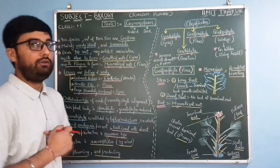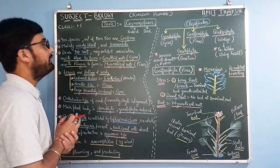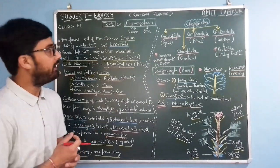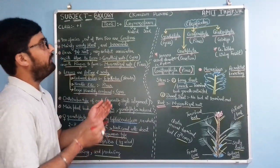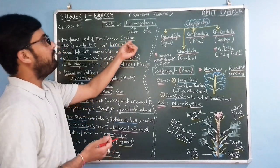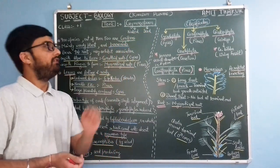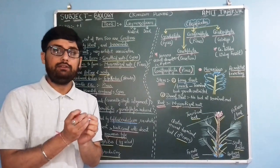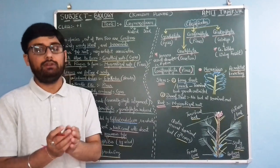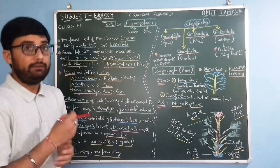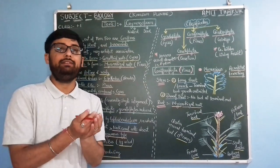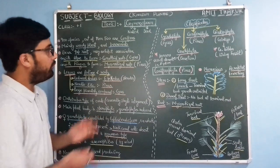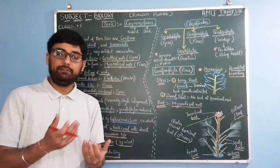Good morning students. Today our topic is gymnosperms. We have completed algae, bryophytes, and pteridophytes in plant kingdom. Today we are going to start gymnosperms. The meaning of 'gymno' means naked and 'sperm' means seed, so gymnosperms have naked seeds — seeds that are not enclosed inside a fruit, unlike angiosperms where seeds are enclosed in fruit.